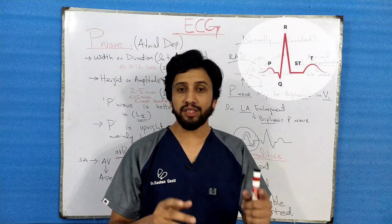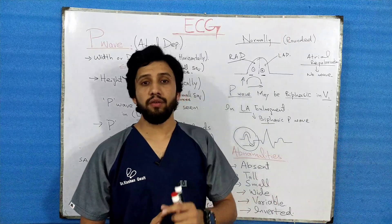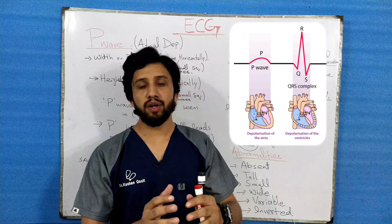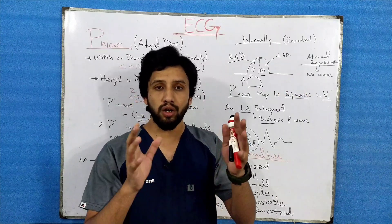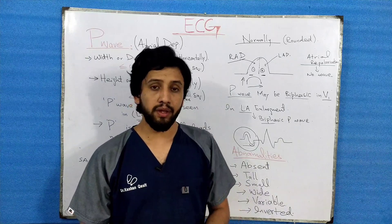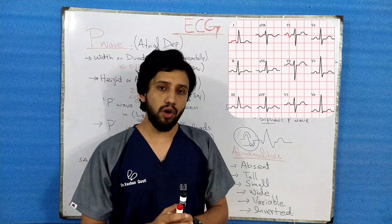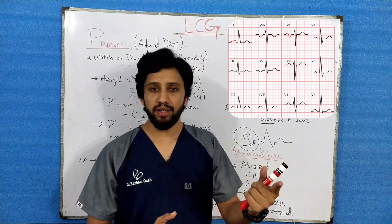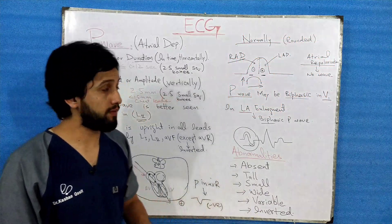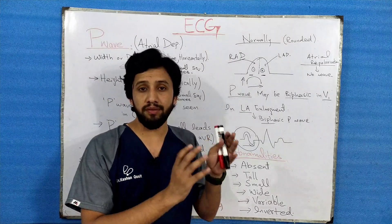The P wave is the first wave of the P-QRS complex. This wave is produced due to atrial depolarization — in simple words, it is produced due to the contraction of the part of the heart we call the atria. The P wave is usually upright in almost all leads of the ECG, except in aVR where it is inverted.